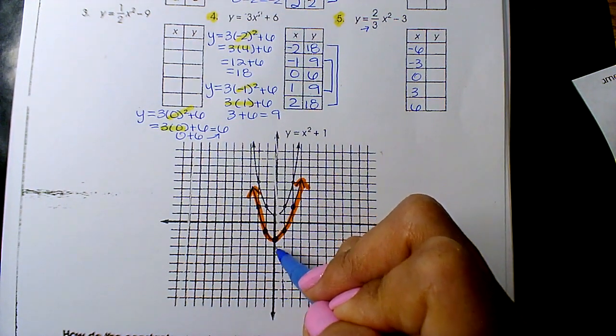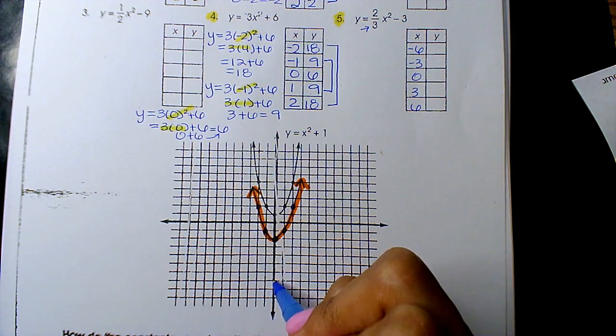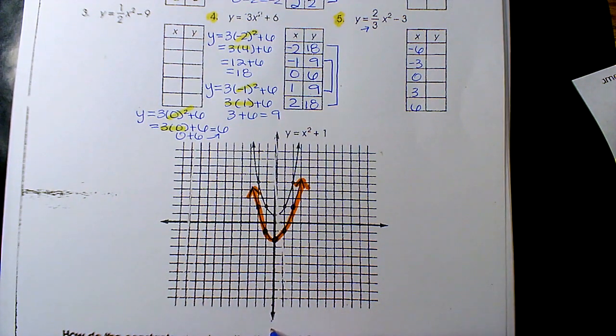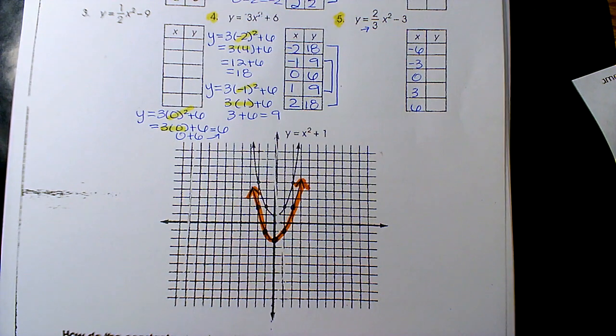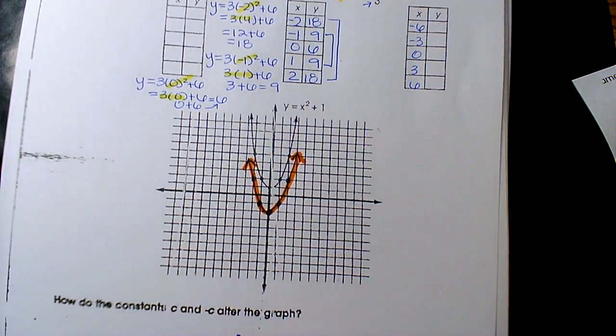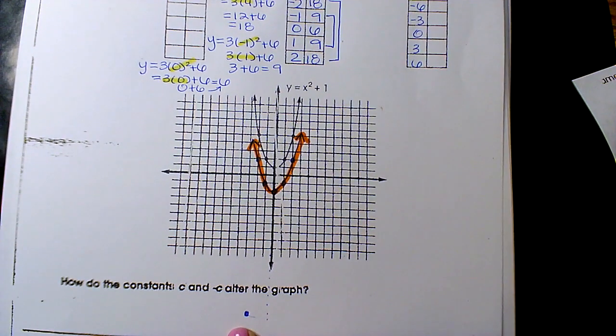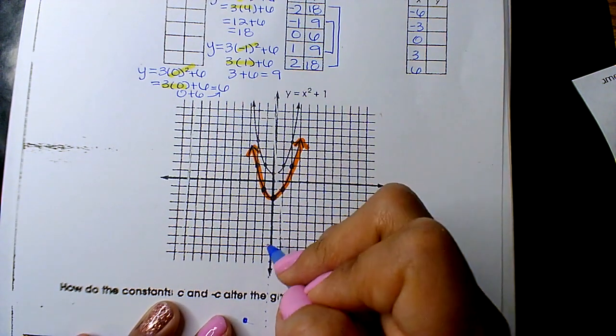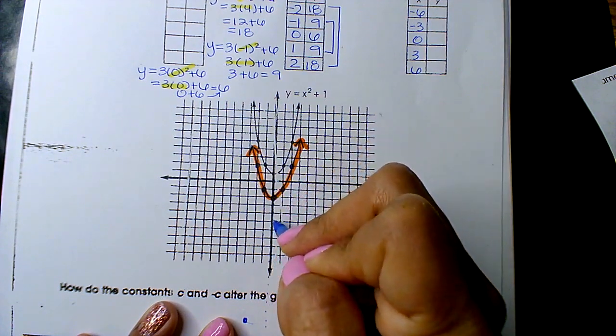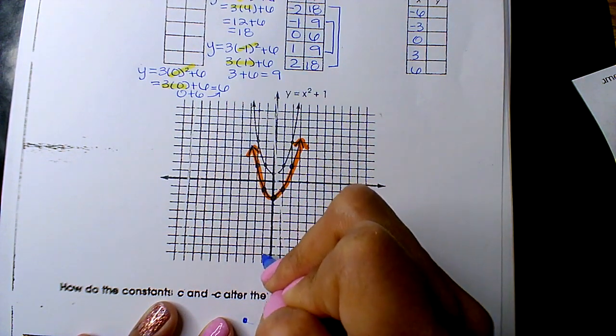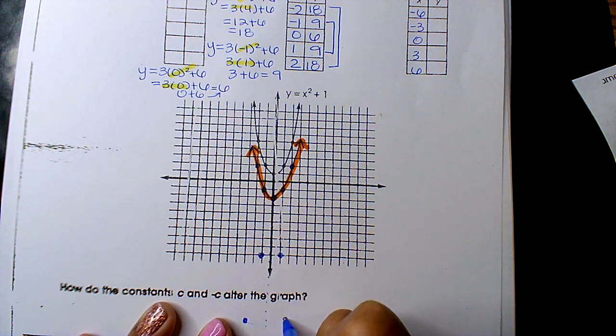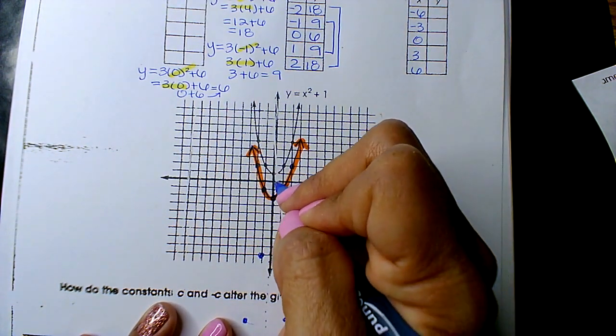Oh hello, does this go 1, 2, 3, 4, 5, 6, 7, 8, 9, 10. Okay, I actually went all the way down. Negative 2, 18. Negative 1, 9. And 0, 6.